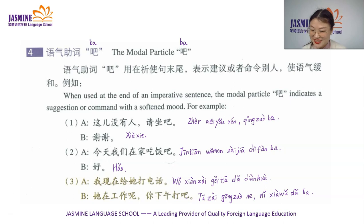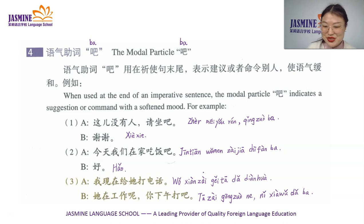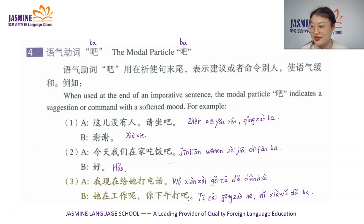If you say 你下午打 without 吧, it's a strong requirement, a strong command. It sounds like you are a leader — you're asking somebody to listen to you. It sounds arrogant. So we need 吧, most of the time.